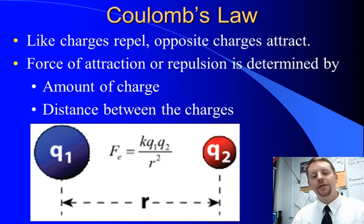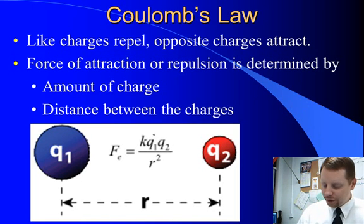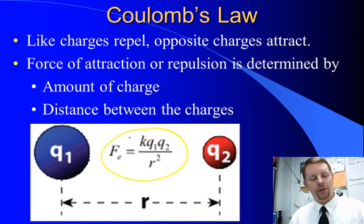And that's an inverse square relationship, just like when we talked about the Law of Gravitation. So, our formula is the electrical force, Fe, equals K, a constant, times charge 1, Q1, times charge 2, Q2, both of those in Coulombs, divided by the square of the distance between them, R squared in meters.